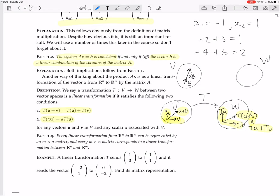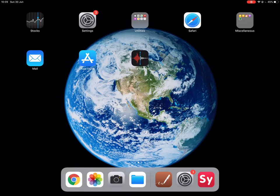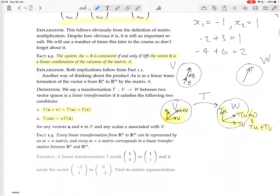Anyway, you take this vector u, you multiply it by alpha to get alpha u, then you transform it to get T of alpha u.